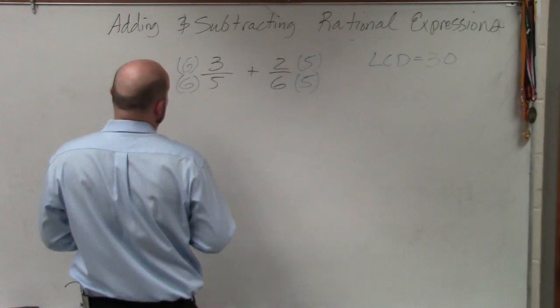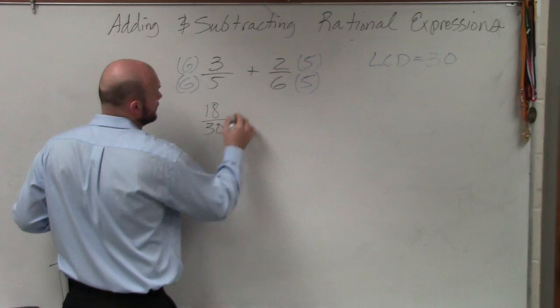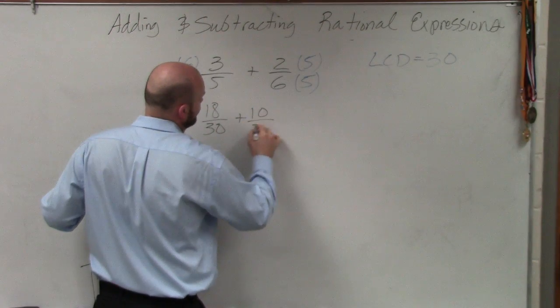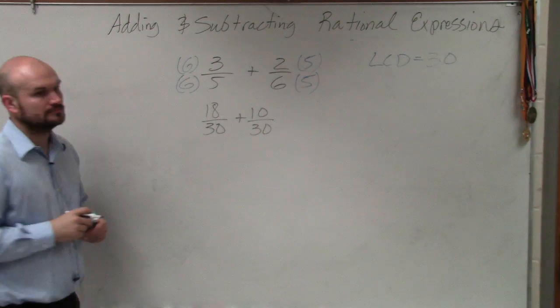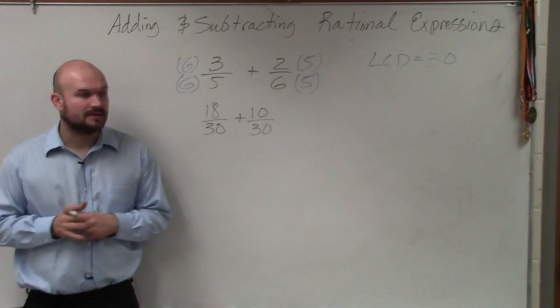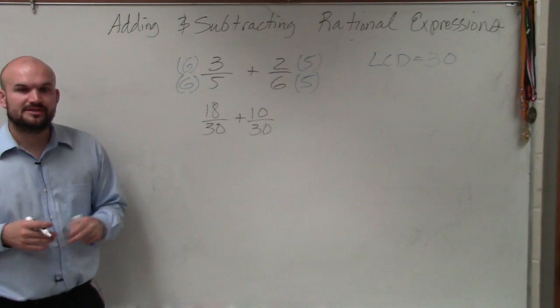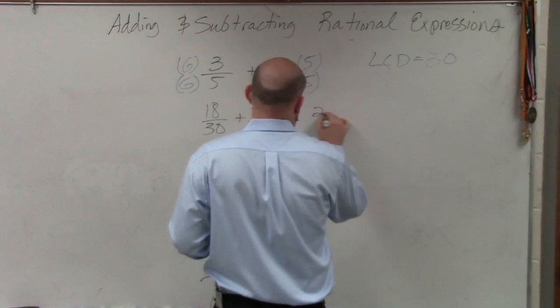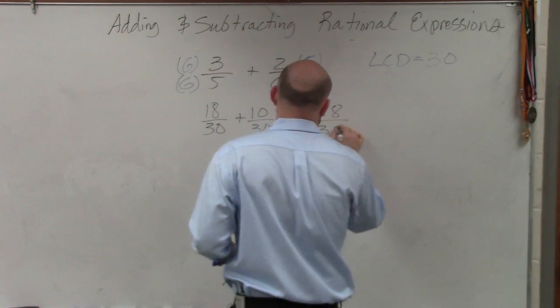So therefore, now I have 18 over 30, plus 10 over 30. Everybody following me? OK. So now I can simply just add them up. 28 over 30.